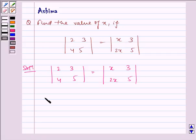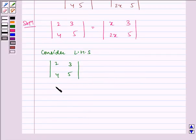Now first consider LHS where we have 2, 3, 4, 5 which I am solving will give 10 minus 12 which is equal to minus 2.